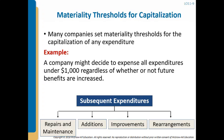We classify subsequent expenditures as four classes. Repairs and maintenance — we've already kind of looked at. It doesn't extend the life or efficiency of an asset; you expense it when it's incurred. For additions, improvements, and rearrangements, it's a different story.